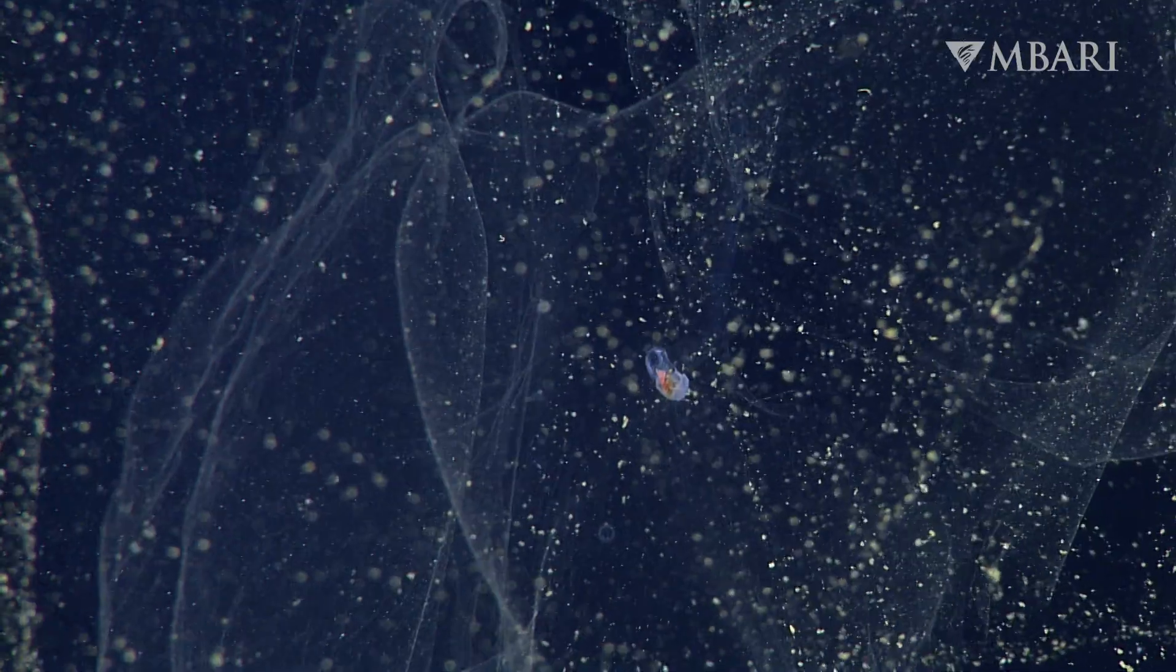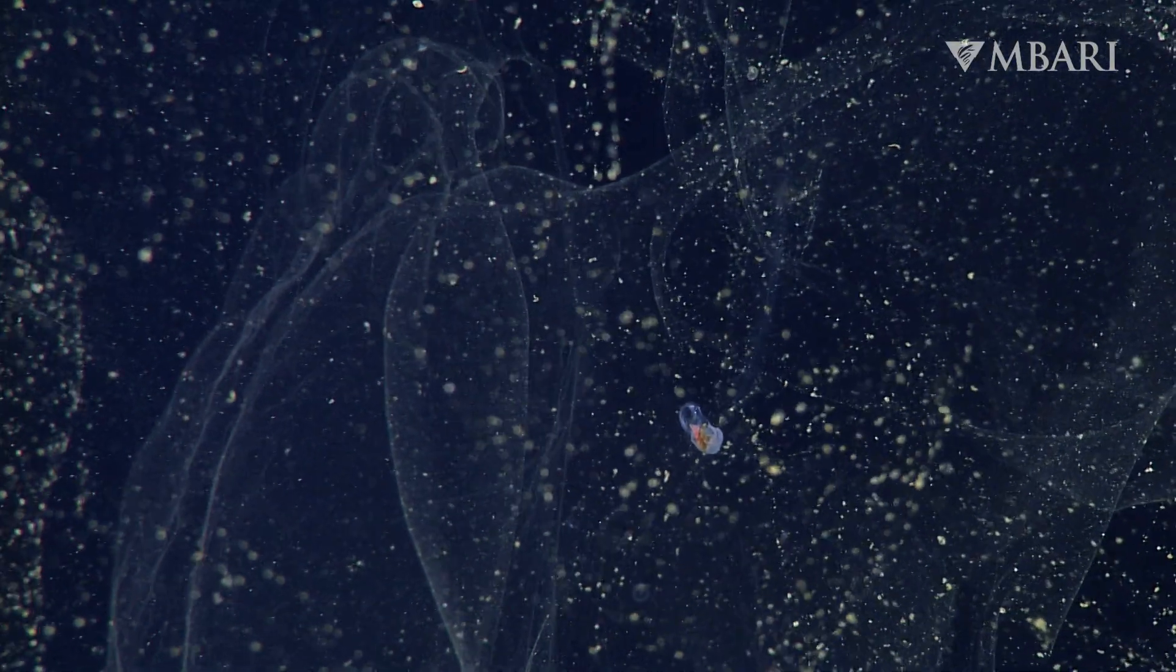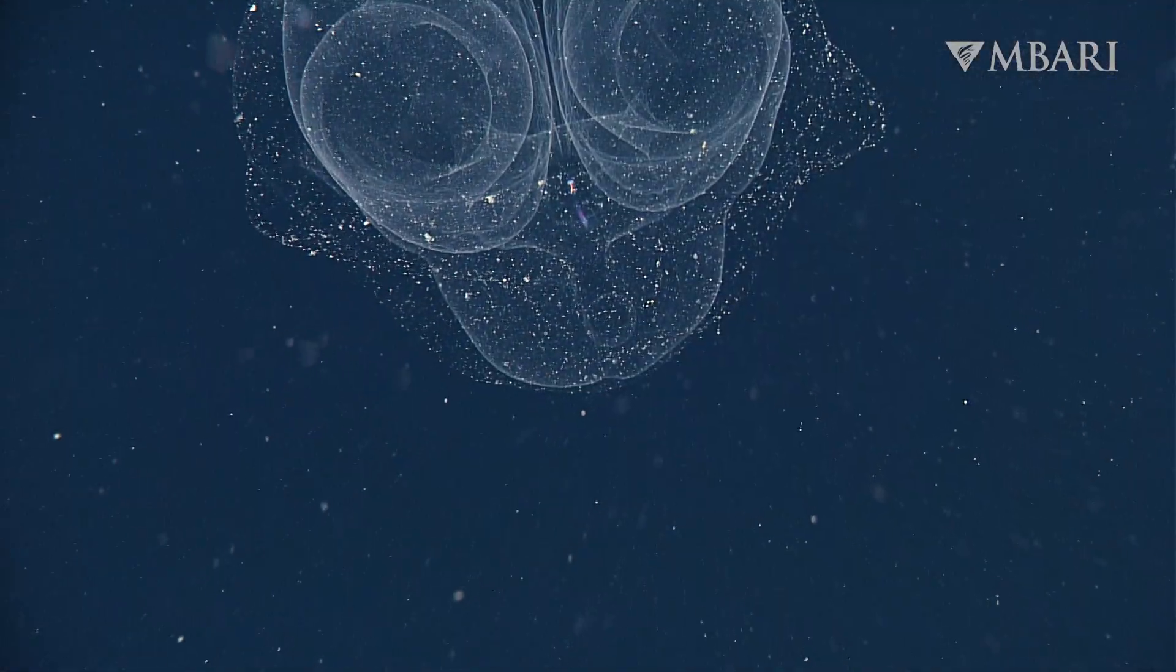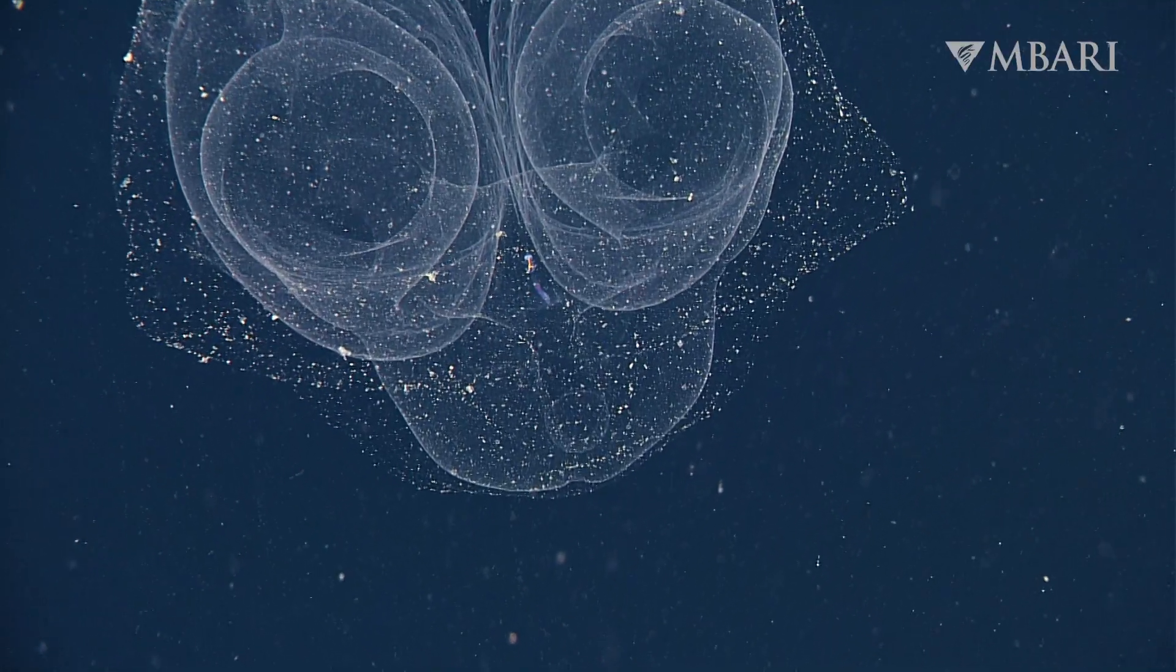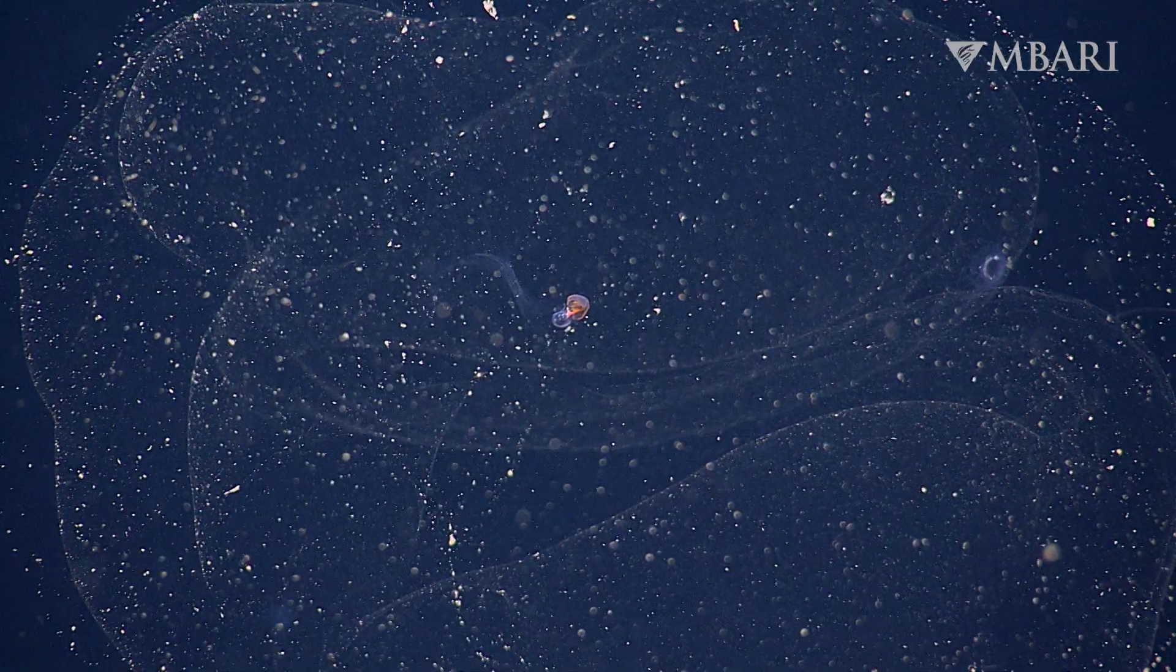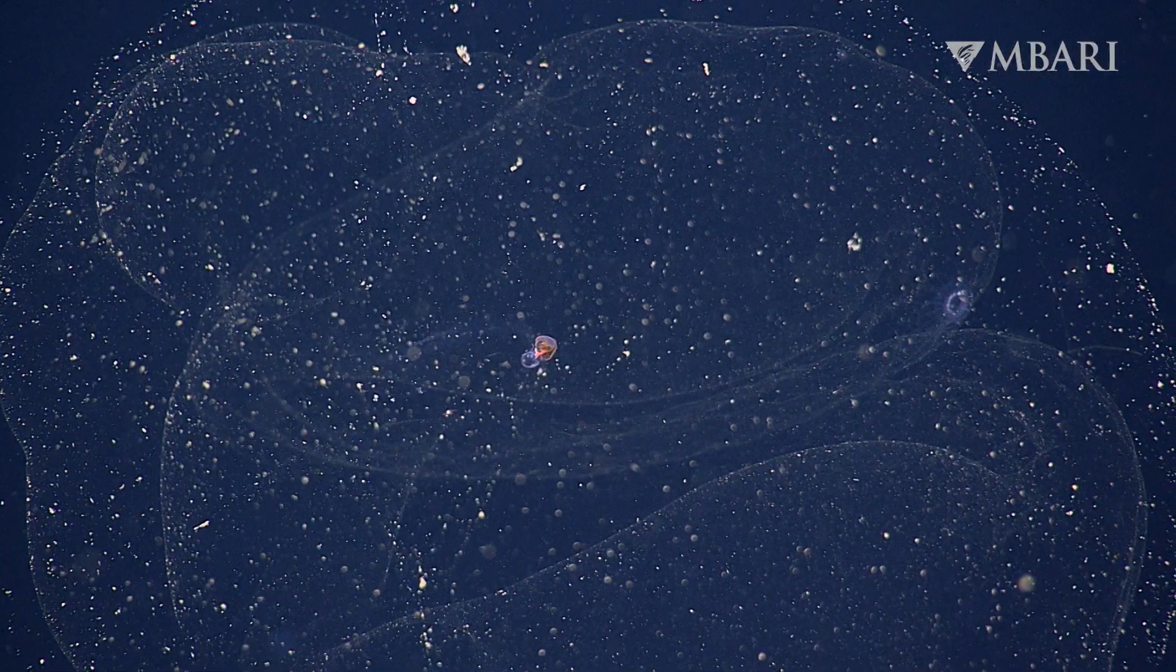Mesocordius erythrocephalus is one of five previously unknown larvacean species that MBARI researchers have described from the depths of Monterey Bay. A bright red gut makes them easy to identify.